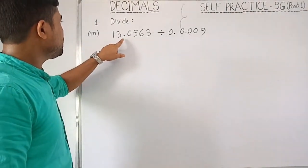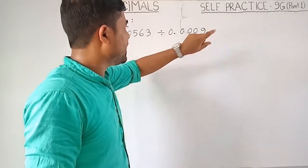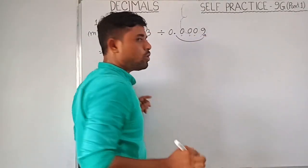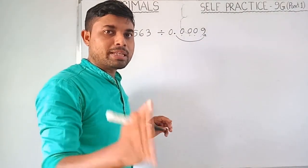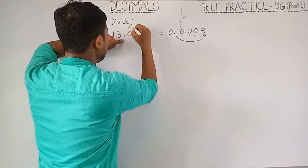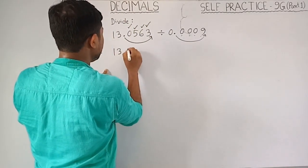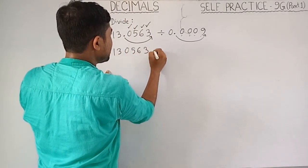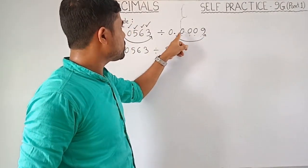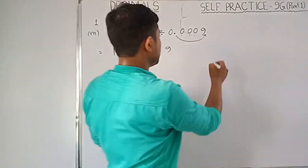Question M: 30.0563 divided by 0.0009. How many decimal places in the divisor? 1, 2, 3, 4 - so shift four decimal places. Shift the dividend four decimal places as well: count 1, 2, 3, 4. So the dividend becomes 300563 divided by 9.